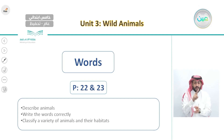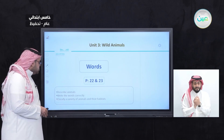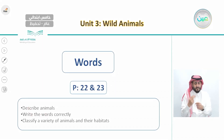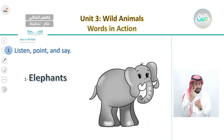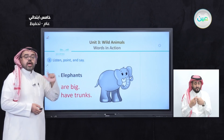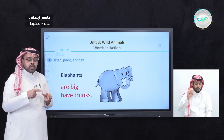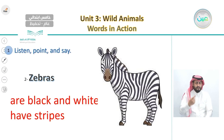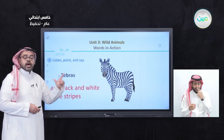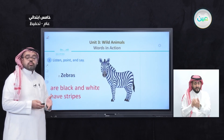After that, we went to the third lesson, Words, on pages 22 and 23. Our goals were to describe animals, write the words correctly, and classify animals by their habitat — the place they live. We described animals using two phrases each. For elephants, we said: they are big and they have trunks. For zebras: they are black and white and have stripes.